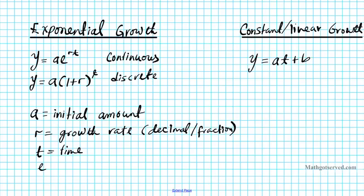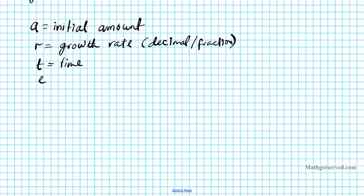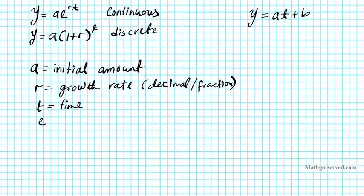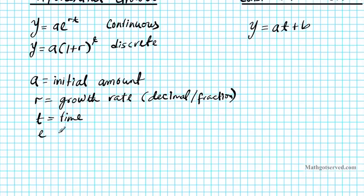Now e is a number — you're not going to change that, just leave e alone. We're going to input it just like that in the calculator. E is equal to e. And then y is the final amount.